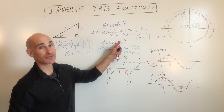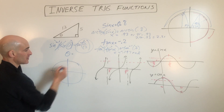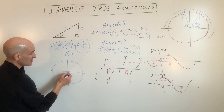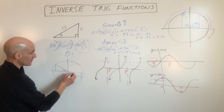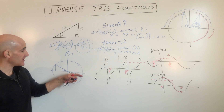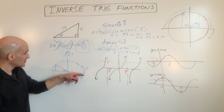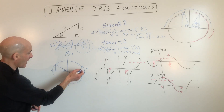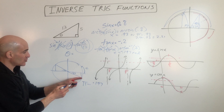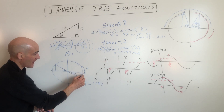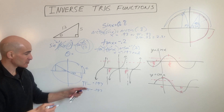So where is tangent negative? It's negative in the second quadrant and the fourth quadrant. So we have negative 0.197, which lands here and also here on the unit circle — the reference angle is 0.197. If we need all solutions from 0 to 2π going in the positive direction, the second quadrant solution is pi minus 0.197, and the fourth quadrant solution is 2pi minus 0.197. Those are your two solutions.